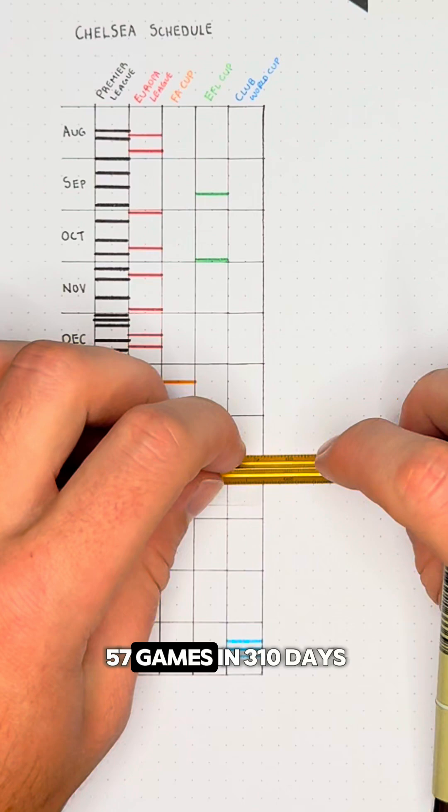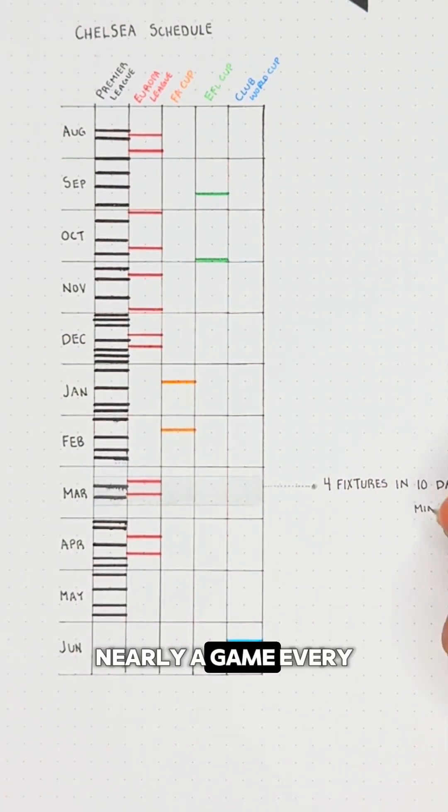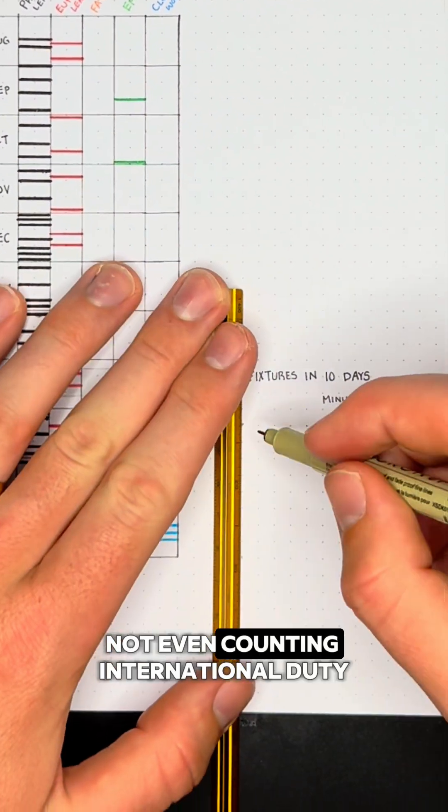That's a minimum of 57 games in 310 days, nearly a game every five days, not even counting international duty.